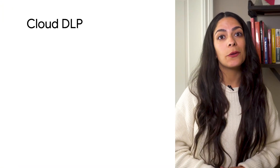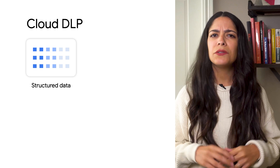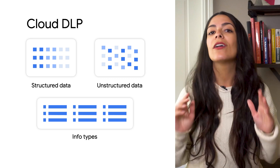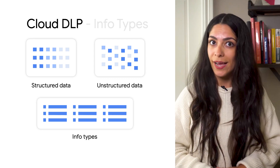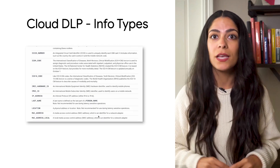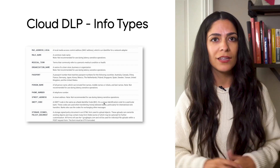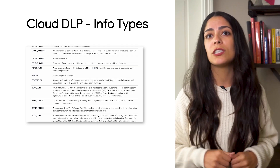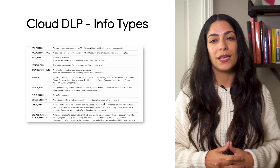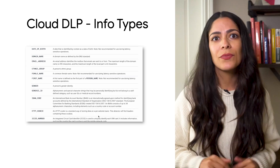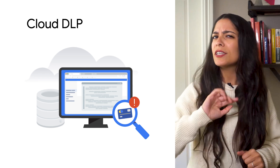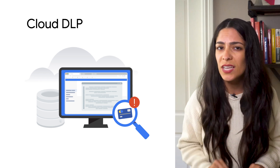First, let's understand how DLP inspection works. The Cloud DLP engine inspects structured and unstructured data and classifies it using what we call info types — our predefined data tags. Out of the box, DLP provides over 150 different info types, including personally identifiable information, financial data types, global and region-specific types, and more. You can extend these with custom info types and detection rules to meet your business's needs. For example, the DLP engine can tell you where it found an instance of a credit card number, even giving you details down to the byte offset where it was found.